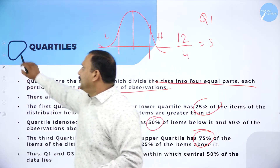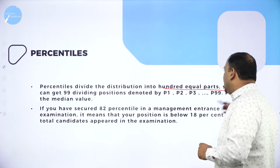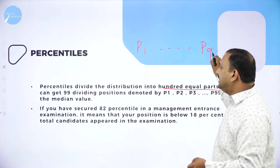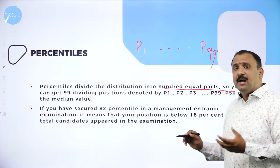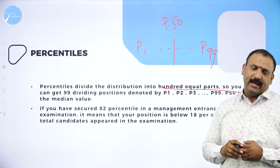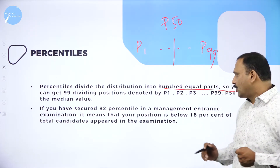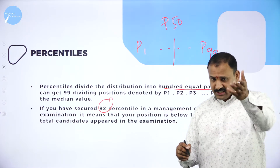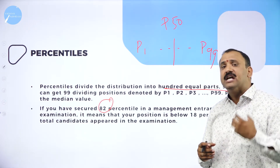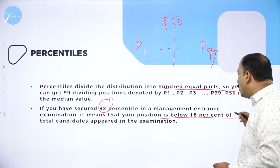Moving forward — percentiles. This also an important concept, which divides data into 100 equal parts, denoted from P1 to P99. P50 is the median — the middle value. Now, this is very applicable: suppose you have scored 82 percentile in a management entrance exam like MAT or CAT — it means your position is below the top 18% of all candidates who appeared in the examination.